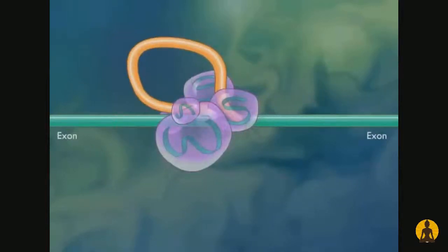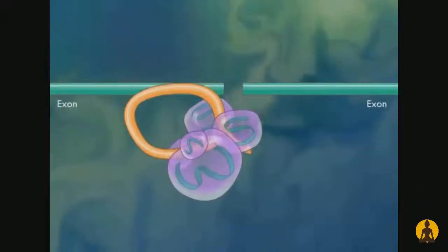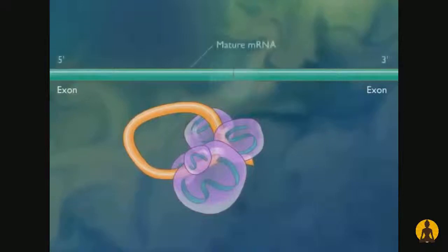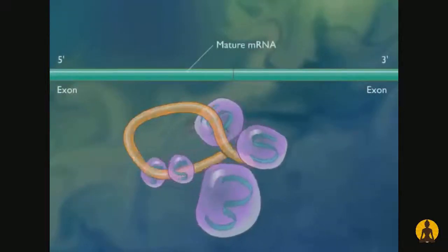The large complex of snRNPs called a spliceosome then excises the intron and the exons are joined together. The snRNPs are then released.